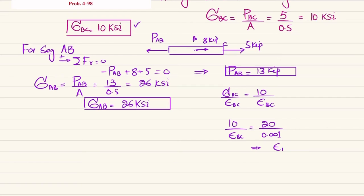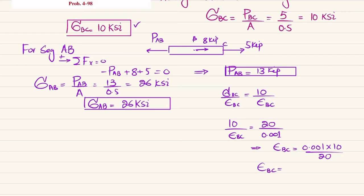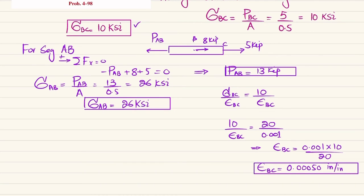Solving: epsilon_BC equals 0.001 multiplied by 10 divided by 20, which gives strain in BC equal to 0.0050 inch per inch. This is a dimensionless quantity.